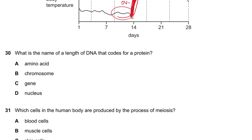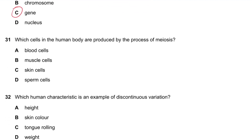Question 30: What is the name for the length of DNA that codes for a protein? It's a gene — that's the definition. Question 31: Which cells in the human body are produced by meiosis? The only cells produced by meiosis are sex cells — sperm cells or egg cells. Answer is B.